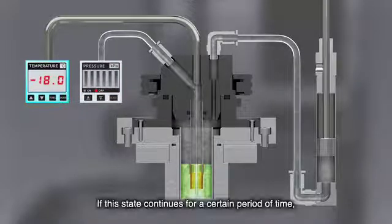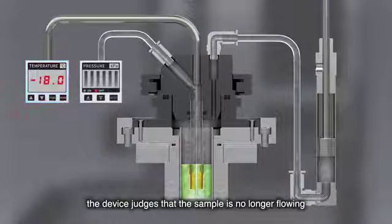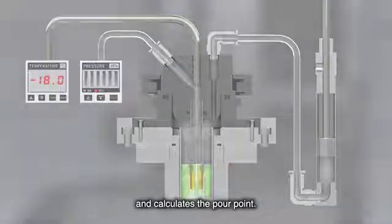If the state continues for a certain period of time, the device judges that the sample is no longer flowing and calculates the pour point.